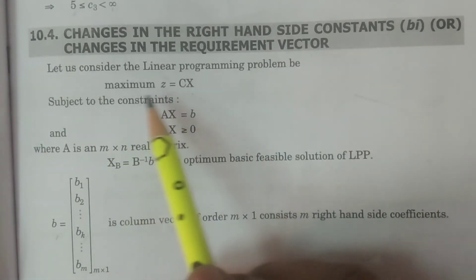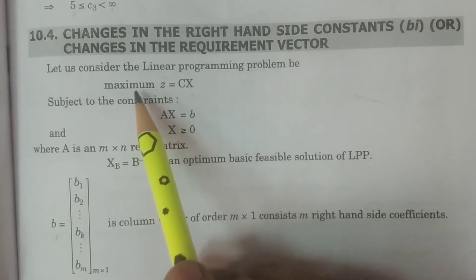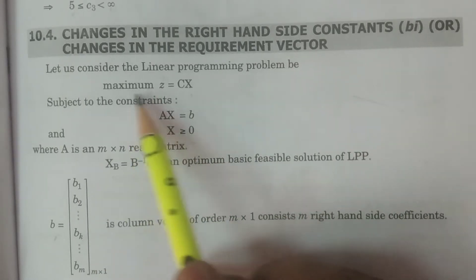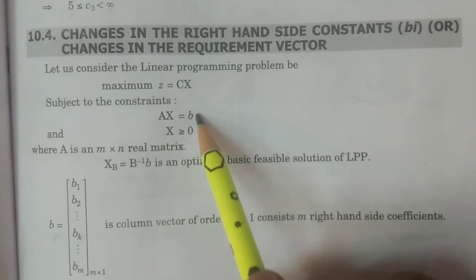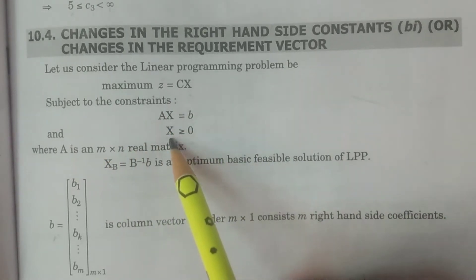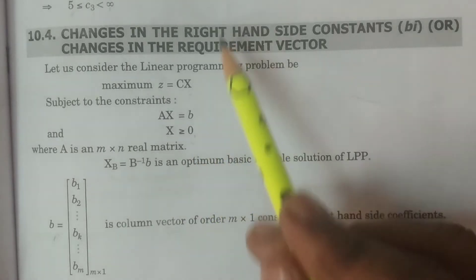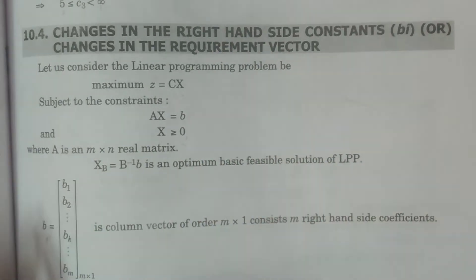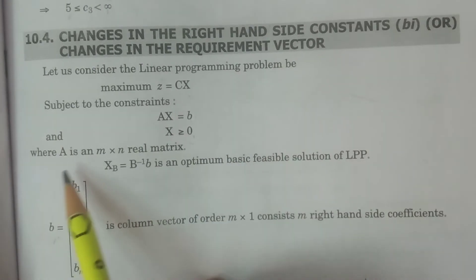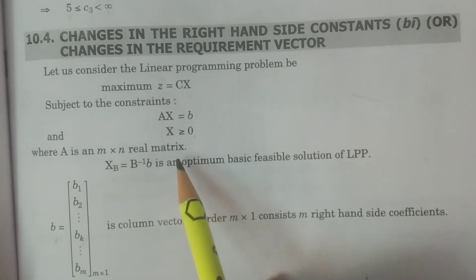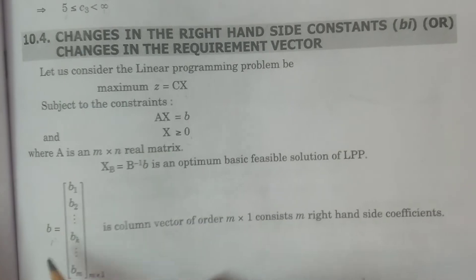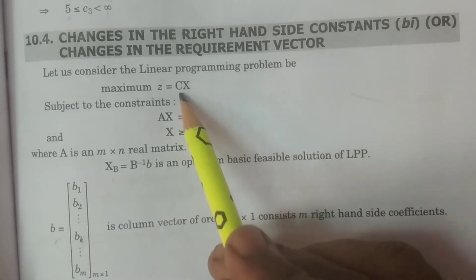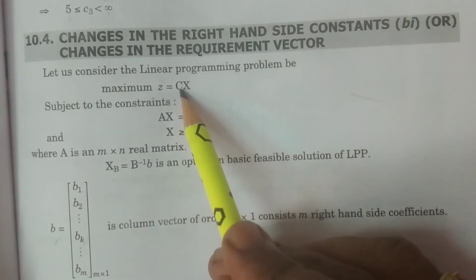Now, consider the LPP: Maximize z = cx, subject to the constraints Ax = b, and non-negative restrictions x ≥ 0. In matrix form, A is a real matrix. The optimum solution is xb = B⁻¹b, where b is the right-hand side vector, c is the coefficient vector for the objective function.